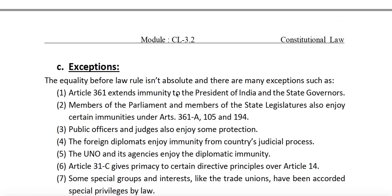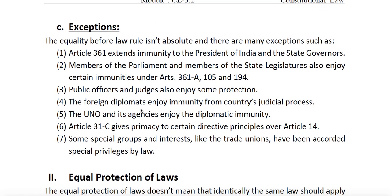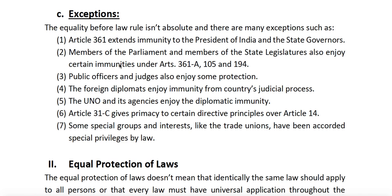In India, we don't strictly follow equality before law and provide some exceptions, which are provided by the Constitution itself. For example, Article 361 extends immunity to the President of India and state Governors — they are not answerable to the court of law for their official duties, and no arrest or imprisonment can be made during their term of office, to maintain the dignity of the office. But once they vacate their seats, they can be tried.